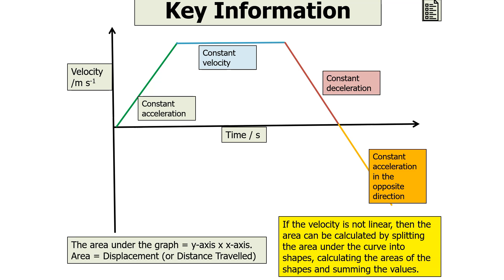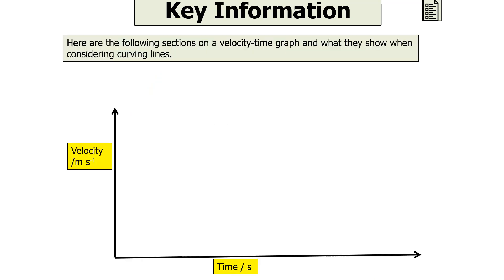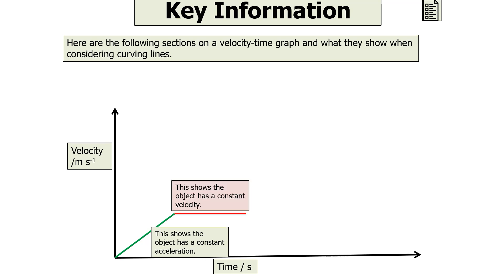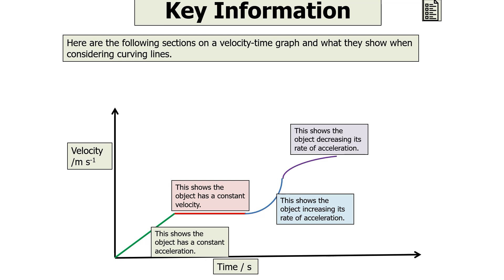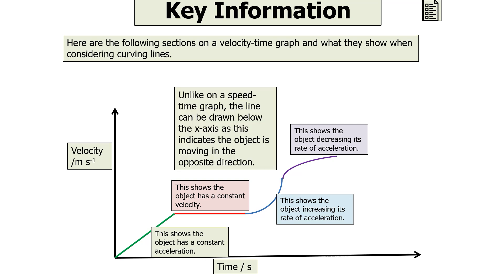Here are the sections on a velocity time graph when considering curving lines. A straight line with positive gradient shows an object with constant acceleration. A flat line shows constant velocity. A line curving upwards shows an object increasing its rate of acceleration. A line curving the other way in purple shows an object decreasing its rate of acceleration. Unlike on a speed time graph, the line can be drawn below the x-axis on a velocity time graph as it indicates the object is moving in the opposite direction.